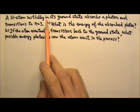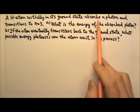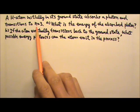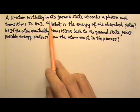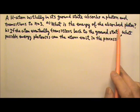A hydrogen atom initially in its ground state absorbs a photon and transitions to n equals 3. Part a: What is the energy of the absorbed photon?